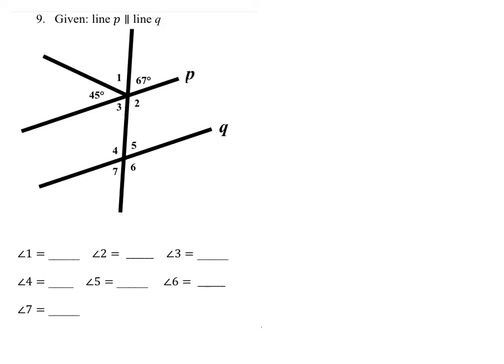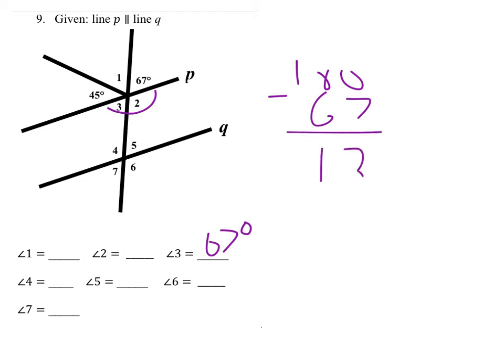We know that angles 67 and 3 are both vertical angles — we know those are congruent, so angle 3 is 67 degrees. And right here, this is a supplementary angle, so 180 minus 67 gives you an answer of 113.